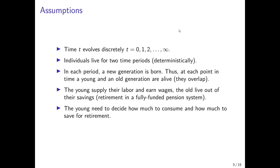What are the basic assumptions and structure of the overlapping generations model? Time t evolves discretely, denoted by uppercase T, and goes from zero to infinity. Individuals live for exactly two time periods — first as young adults in period one, then as old adults in period two. After the second period, they die for certain.